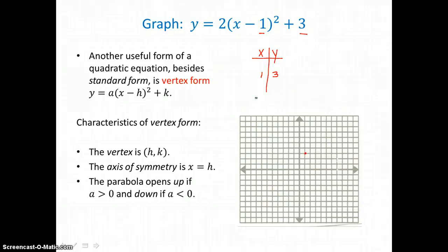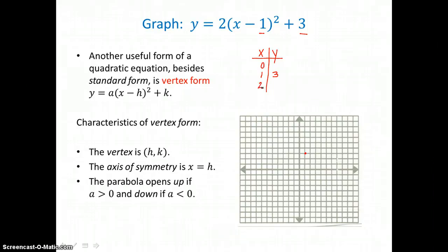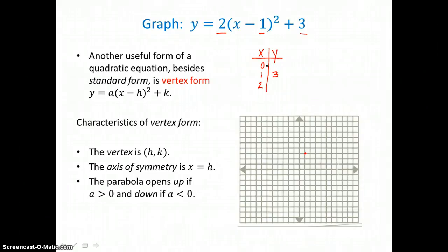Then I want to know how wide to draw this parabola, so I'm going to choose two values on either side of that vertex — maybe 0 and 2 — and put them in my table of values for x. The a value in my equation is positive 2. Because it's positive, I know that this parabola should be opening up. If a were negative, the parabola would open down. So I'll complete my table of values. I'll put 0 in for x: 0 minus 1 is negative 1, and negative 1 squared is positive 1.